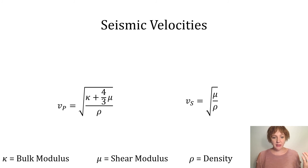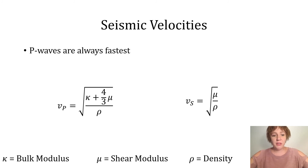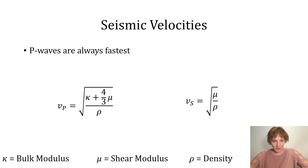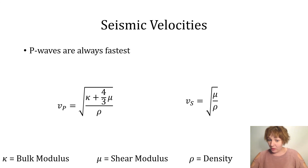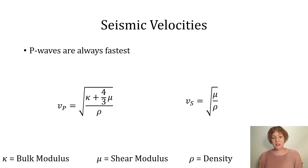P waves are always going to be faster than S waves. Even if the compressibility modulus were zero (which it never is), the shear modulus has a greater impact on the velocity of P waves than it does on S waves. This explains why the P wave always travels faster than S waves no matter what — it comes down to the relationship of these velocities to the elastic moduli. Liquids have no shear strength, which is why S waves can't travel through them.